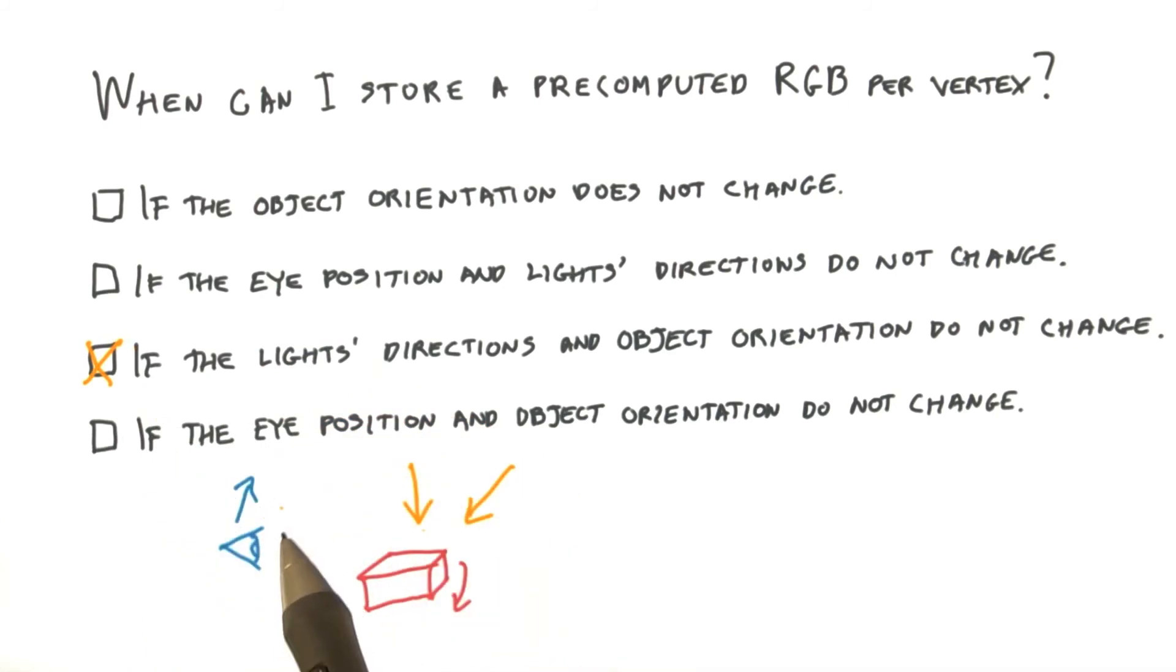The fourth answer has the object's orientation fixed, but like the first answer, the lights can change directions. Surface shading can change, so this answer is incorrect.